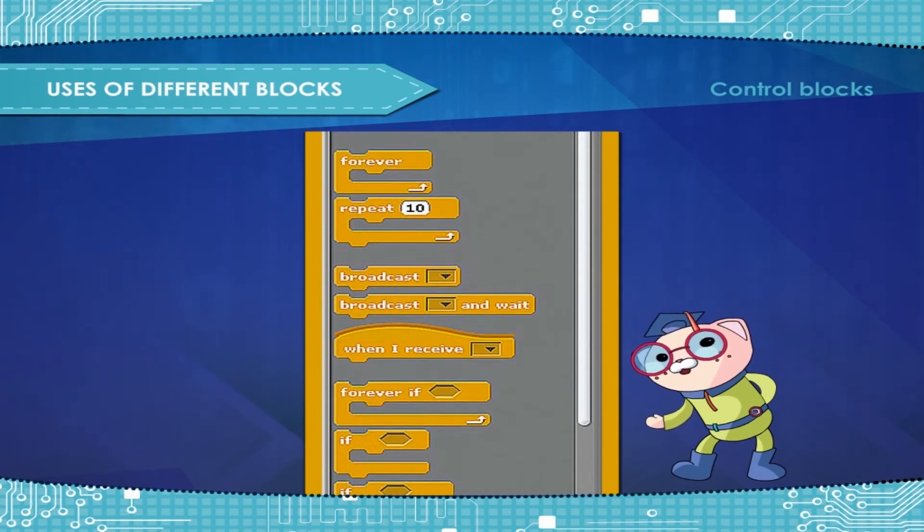Forever is a loop that will never end. If then checks the condition so that if the condition is true, the blocks inside it will activate.